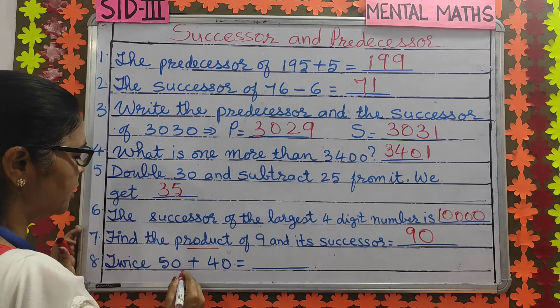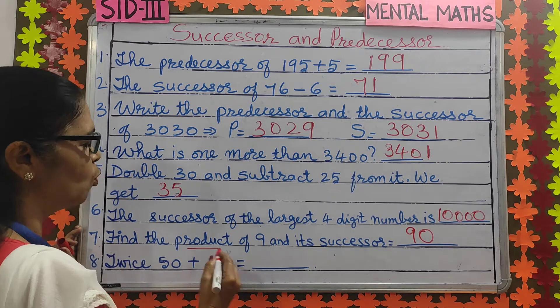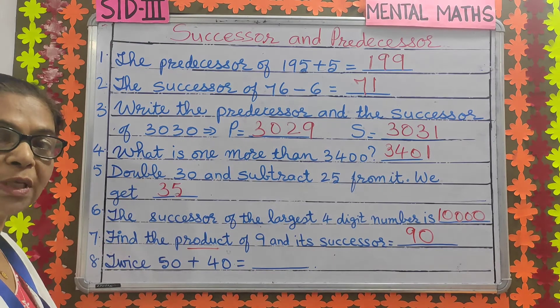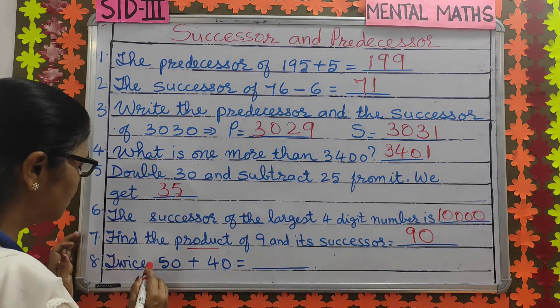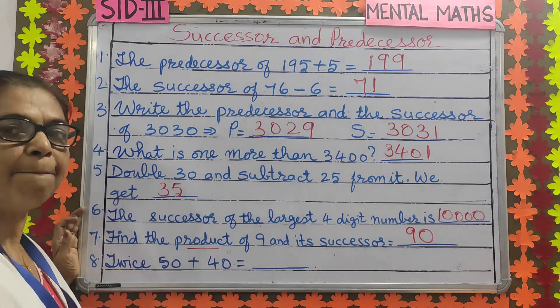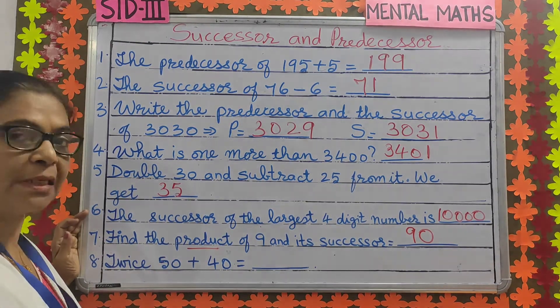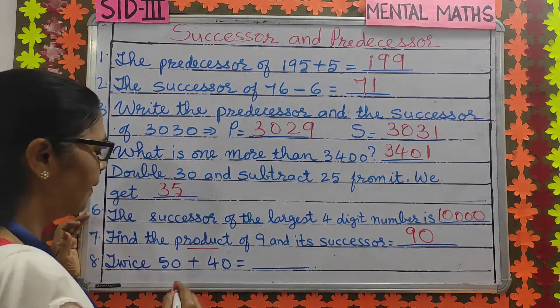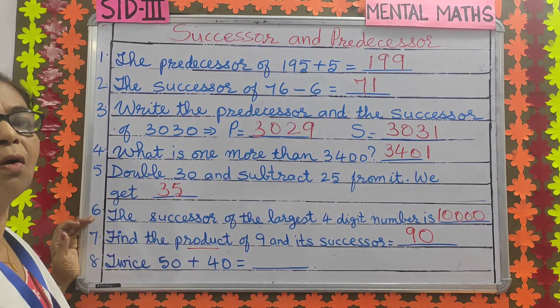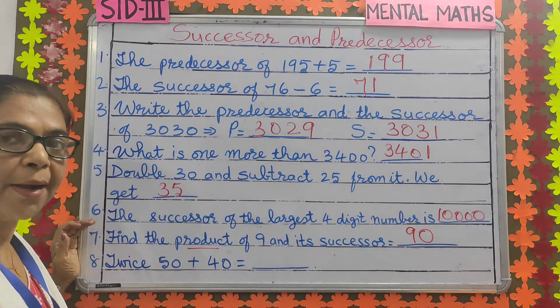Number 8: twice 50 plus 40. Twice means 2 times. So twice 50 means 50 plus 50 is 100. Plus 40 is 140.